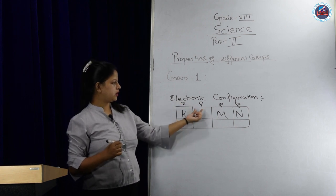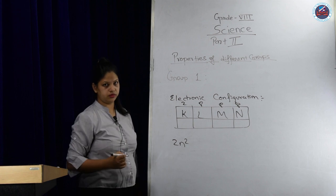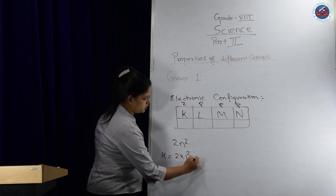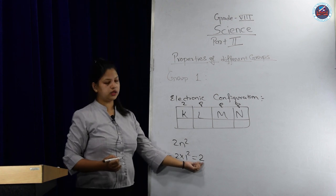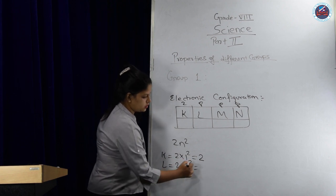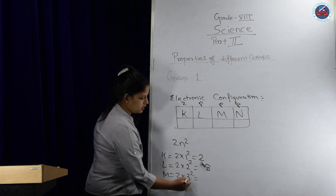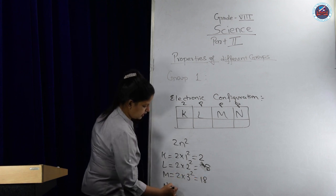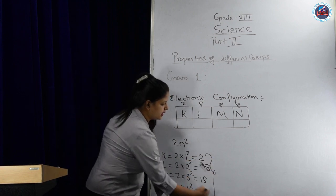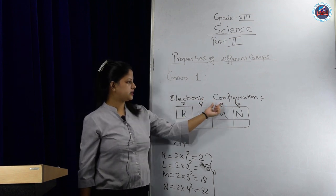K is for the first shell, so here it will be 1 squared, which is 1 times 2 equals 2. It means only 2 electrons can live in the first shell. L is for the second shell, so it will be 2 squared, which is 4 times 2 equals 8. M is third, so 3 squared is 9 times 2 equals 18. And 4 squared is 16 times 2 equals 32. These are the total electrons that can occupy in each shell, but till element 20 we follow the 2, 8, 8, 8 rule.